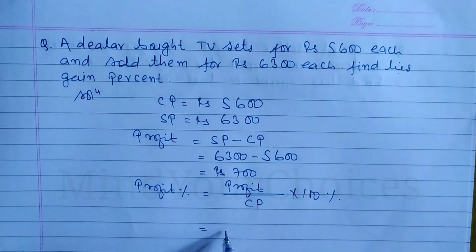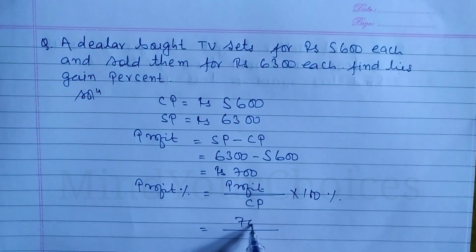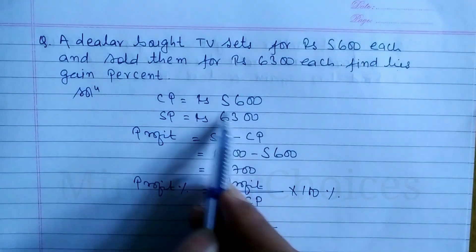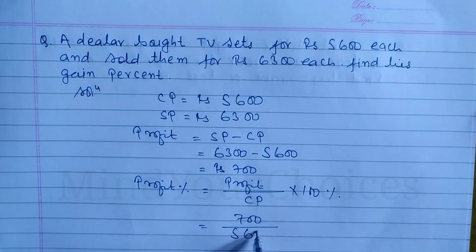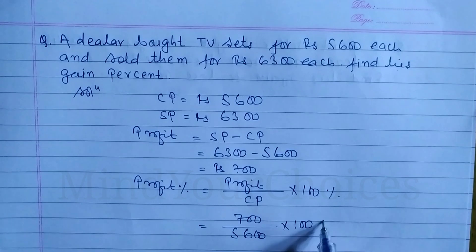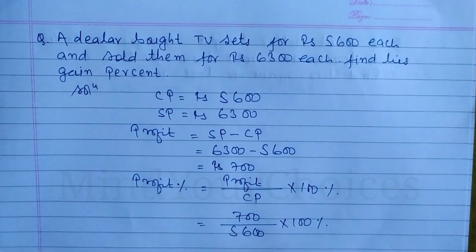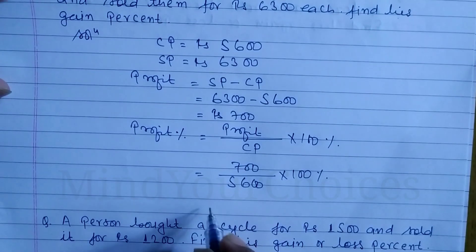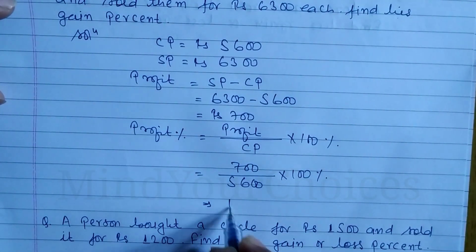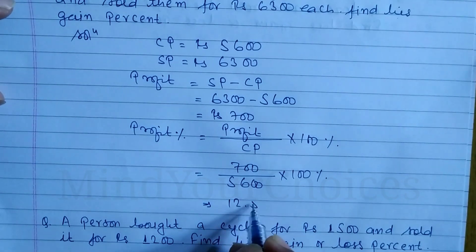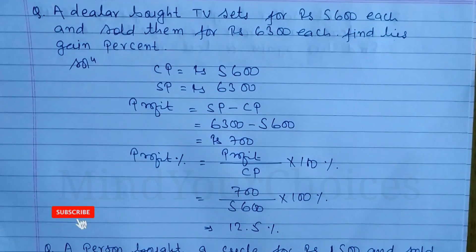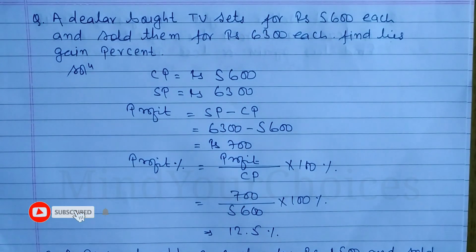Profit is equal to 700, and cost price is equal to 5,600. So, 700 divided by 5,600 into 100 percent. You calculate gain percent: profit percent is equal to 12.5 percent.